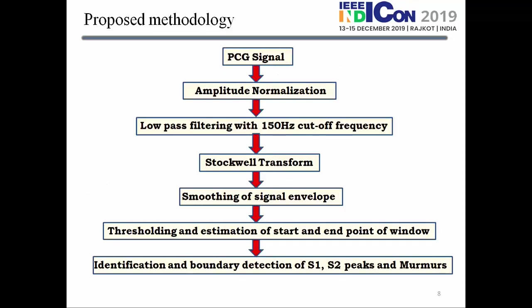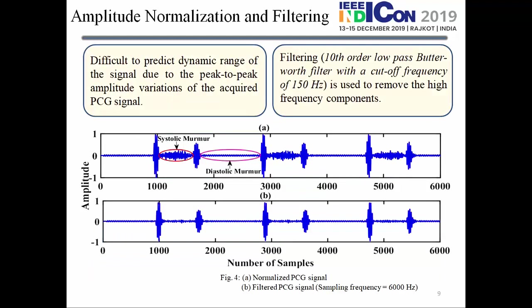This is our proposed methodology. Amplitude normalization is applied first because the peak-to-peak variation in heart sounds is too large due to the amplification factors across subjects, making it difficult to predict the dynamic range. After normalization, we apply a filtering approach using a 10th order Butterworth filter with a cut-off frequency of 150 Hz. Figure 4A represents the normalized PCG signal and figure 4B represents the filtered version.